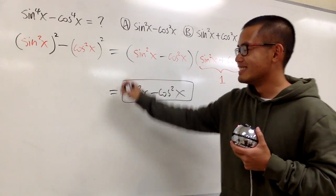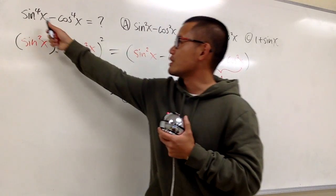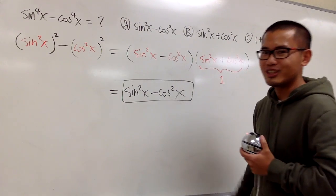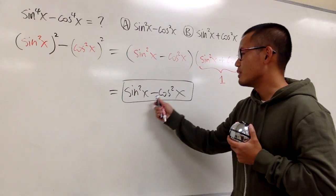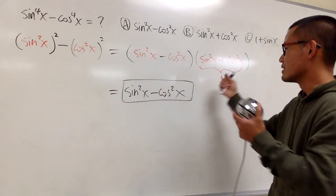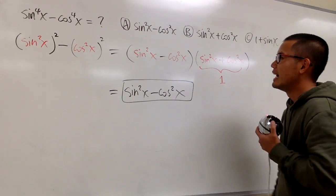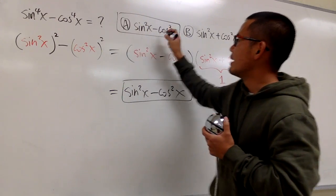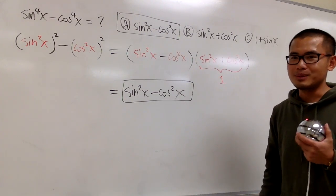And you see the crazy thing is, yes, earlier we start with the fourth power minus the fourth power, and in fact, in this situation, it's the same as the square minus the square. It's just because this works out like that. And the answer will be choice A, sine square x minus cosine square x, and that's what we have at the moment. That's it.